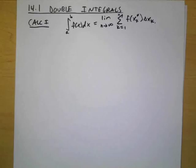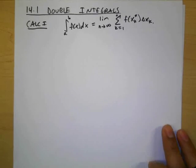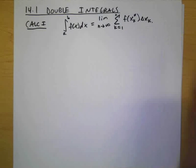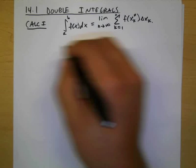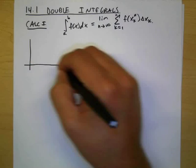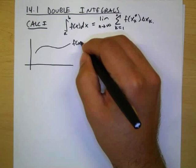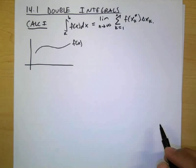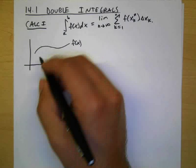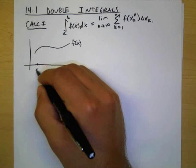Okay. So anyway, this is what you did in Calc 1. The notation might have been a little different, but essentially the picture looked something like this. Here's f of x. You subdivided the interval from a to b into what?